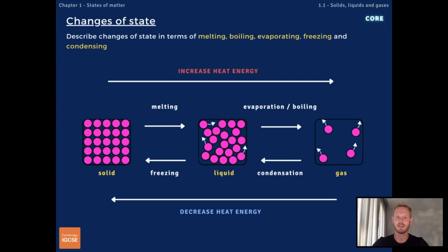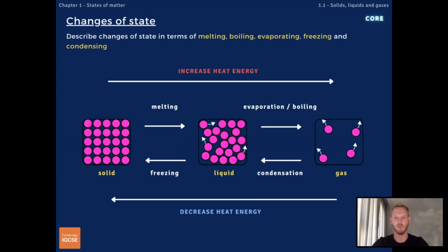You need to describe changes of state in terms of melting, boiling, evaporating, freezing and condensing. Substances can transition from one state to another, and the driver for that is temperature. As temperature increases, solids melt to become liquids and liquids evaporate or boil to become gases. As gases are cooled, they condense to form liquids and liquids freeze to form solids.